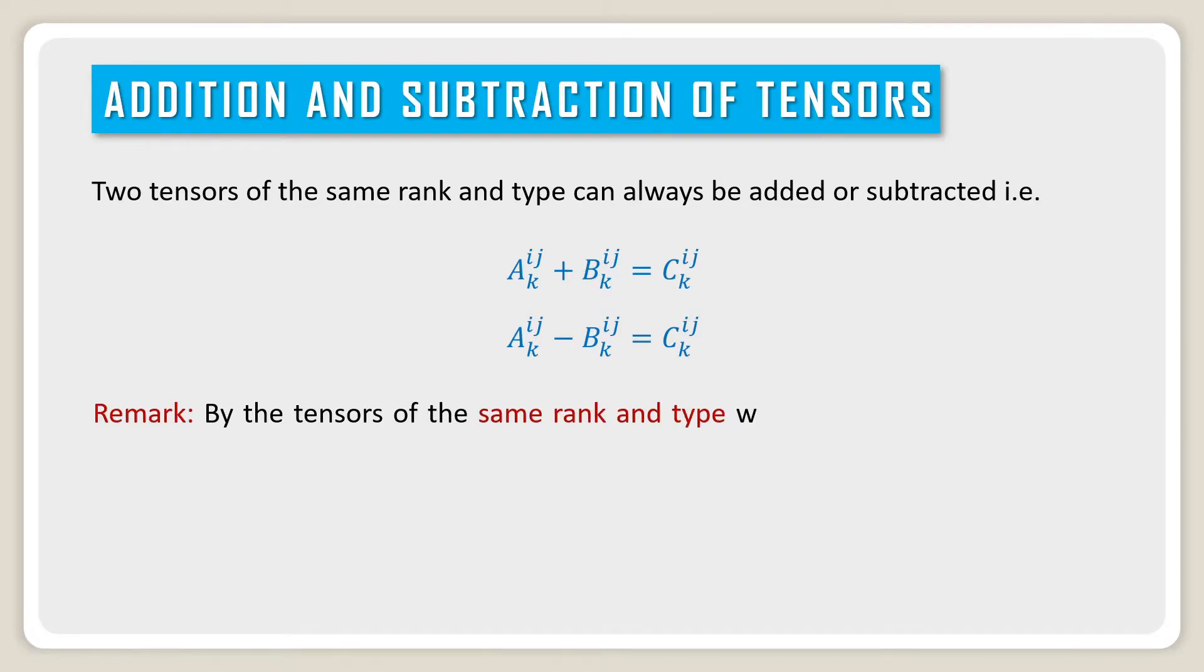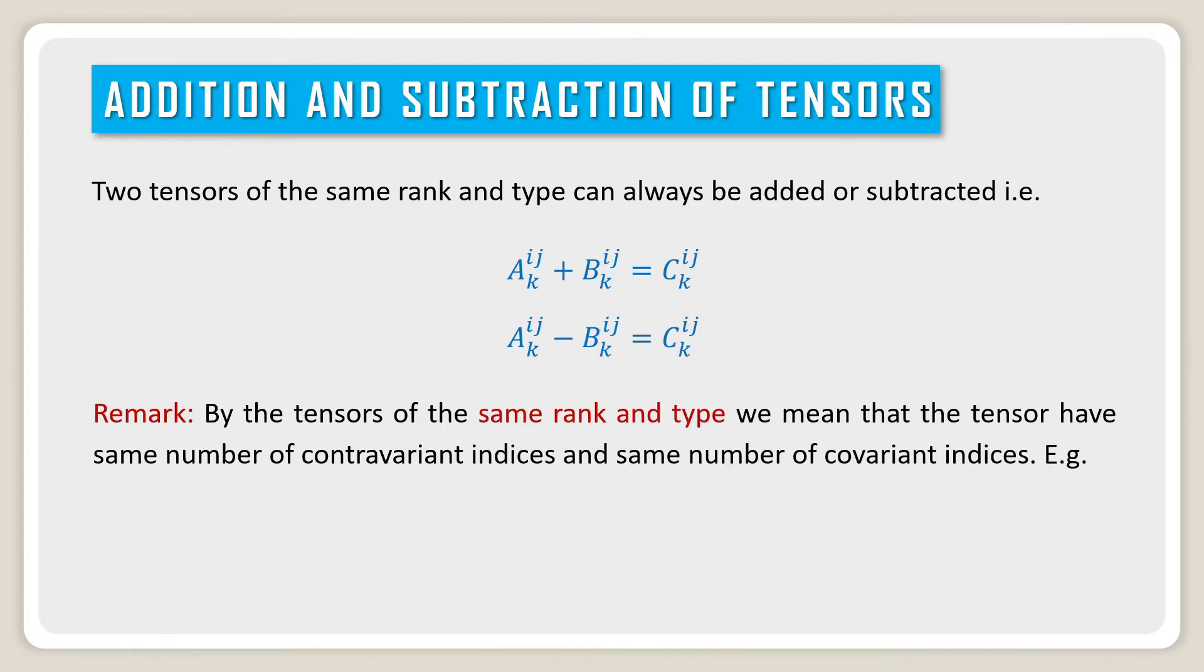Remark: By the tensor of the same rank and type, we mean that the tensors have the same number of contravariant indices and the same number of covariant indices.